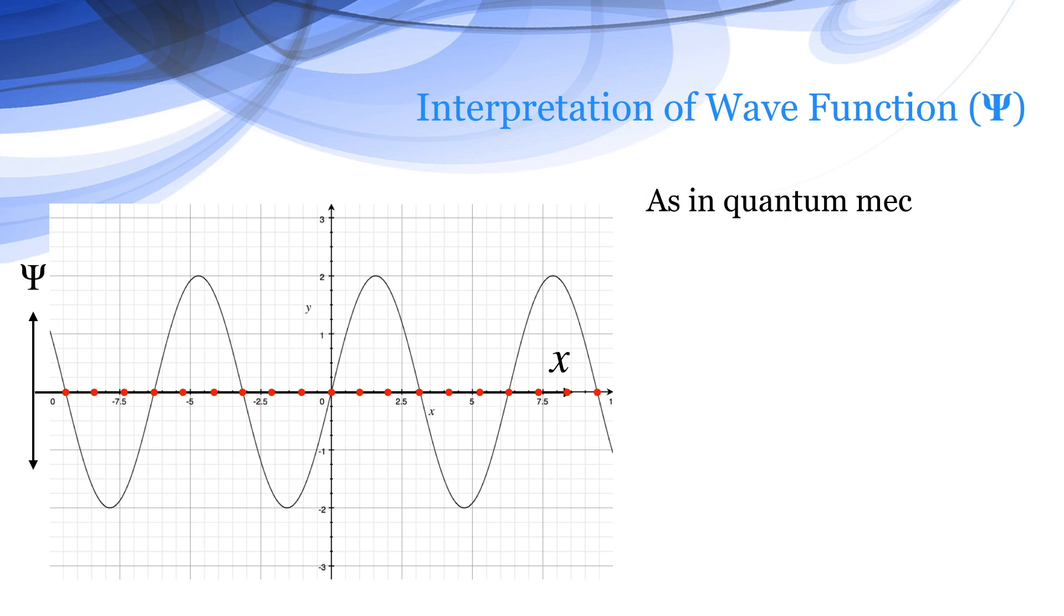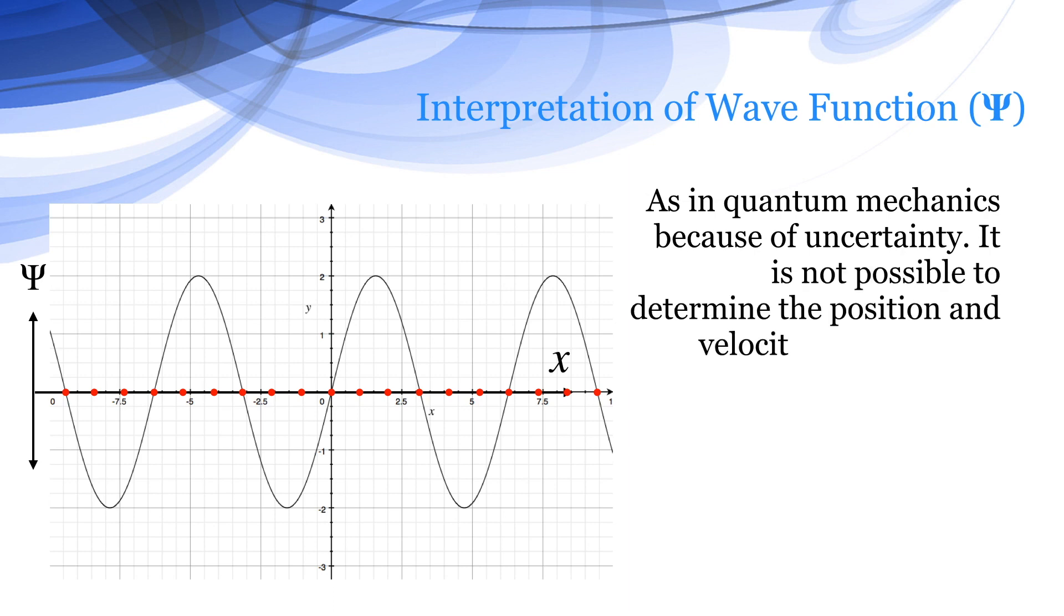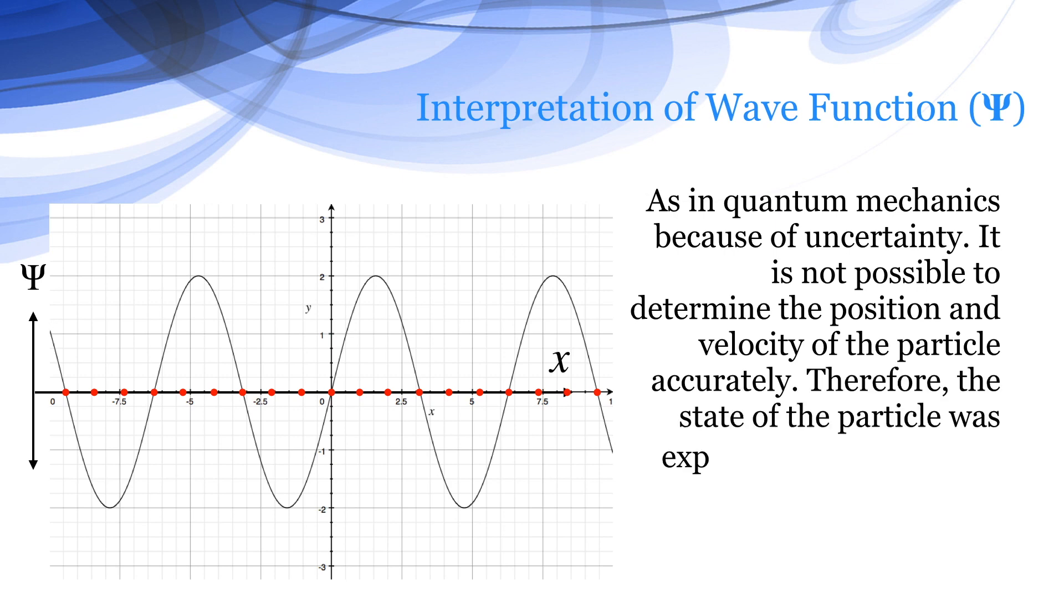In quantum mechanics, because of uncertainty, it is not possible to determine the position and velocity of particles accurately. Therefore, the state of the particle is expressed by the function Ψ in all three directions.